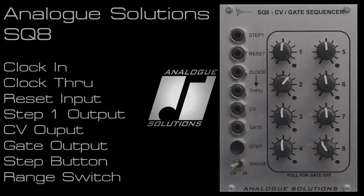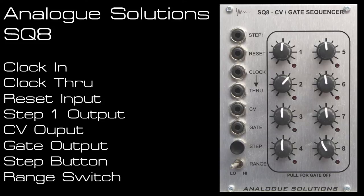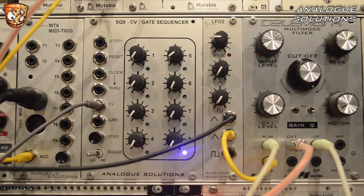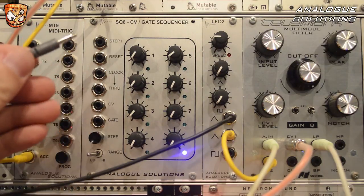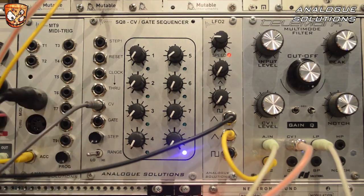Here's the SQ8 sequencer from Analog Solutions, which features both gate and CV sequencing. I'll create a patch highlighting all the features and then use the module at audio rate and also for some filter sequencing. I'll be using the Telemark filter, LFO2, and MT9 MIDI to trigger from Analog Solutions to build up some patches.